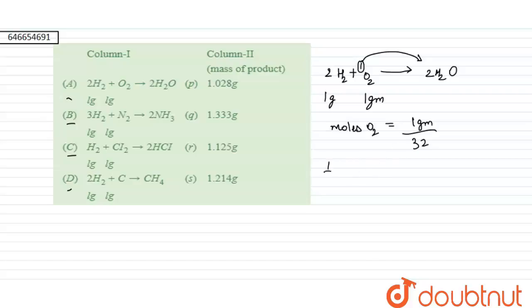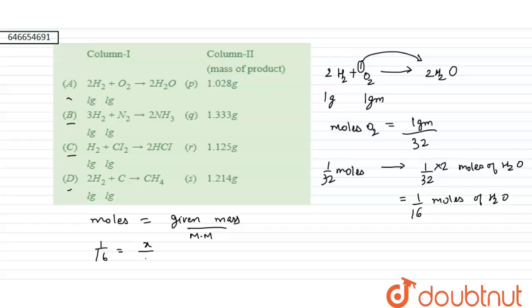This comes out to be 1 by 16. This is the moles of H2O. We need to find the mass of the product, so for that we will use the formula for moles. Moles equals given mass upon molecular weight. So 1 by 16 equals X by 18, which gives X equals 1.125 grams. So option A matches with R.